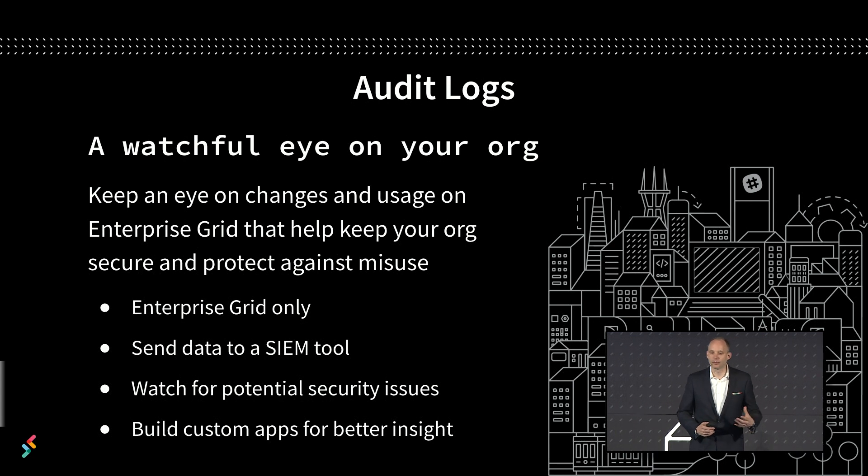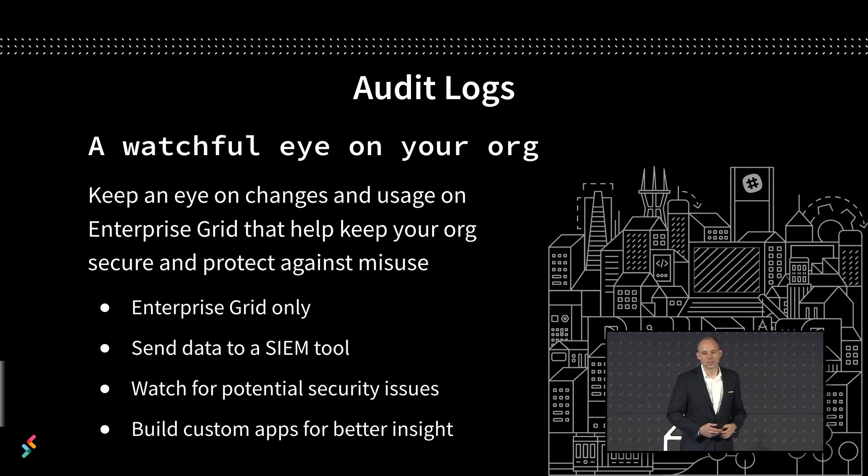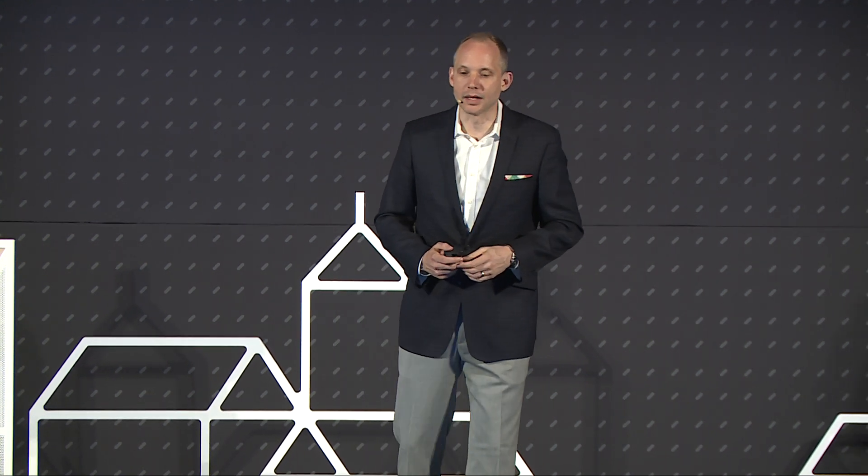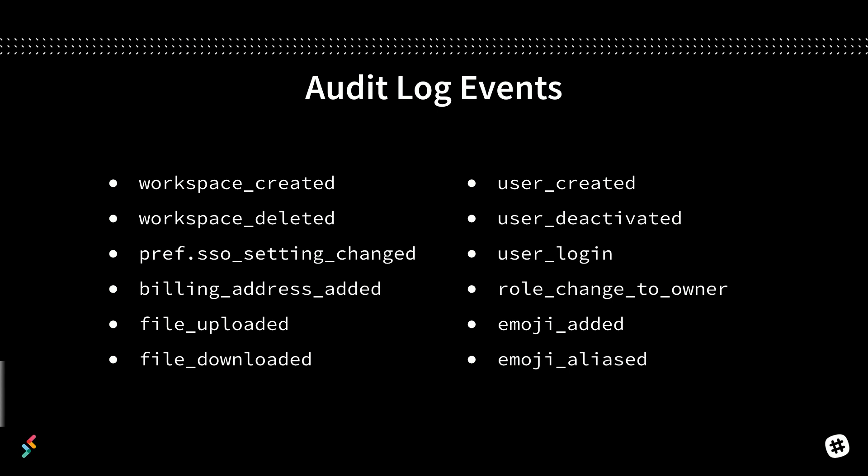Audit logs are also ideally suited for watching for potential security issues by being able to track things like user logins. The audit logs generate a read-only log and create events that provide metadata about the workspaces on an org. Each audit event contains an actor which takes an action on an entity within a certain context. For example, when a user logs into a workspace, they are the actor who takes the action of logging in. Some of the more common events you can track include big changes like a new workspace was created within your org, or something slightly less eventful like a new alias was added to an existing emoji. We're going to continue to build out the audit log events as we continue to grow and evolve the platform.